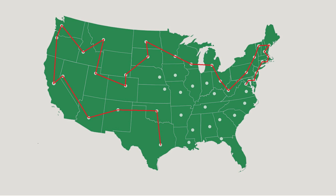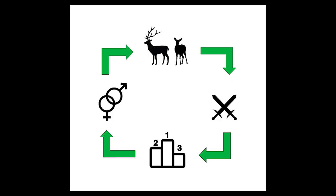Next, we rank the solutions based on how well they solve the problem. In this case, a shorter distance covered means a better performance. Once the solutions are ranked, we take the best solutions and use their attributes to generate a new population of solutions. All of the steps mentioned put together is called a generation. This process of ranking, mixing, and producing a new population happens over and over again, each one called a generation.